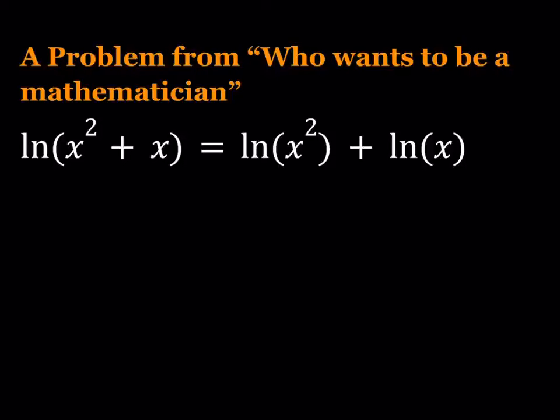We're going to see why. So now we have ln(x² + x) = ln(x²) + ln(x). Sometimes people when they see these things they think that this is a rule, but this is not a general rule. This is a specific situation because the ln of a sum does not equal the sum of ln's. It's kind of like the other way around.